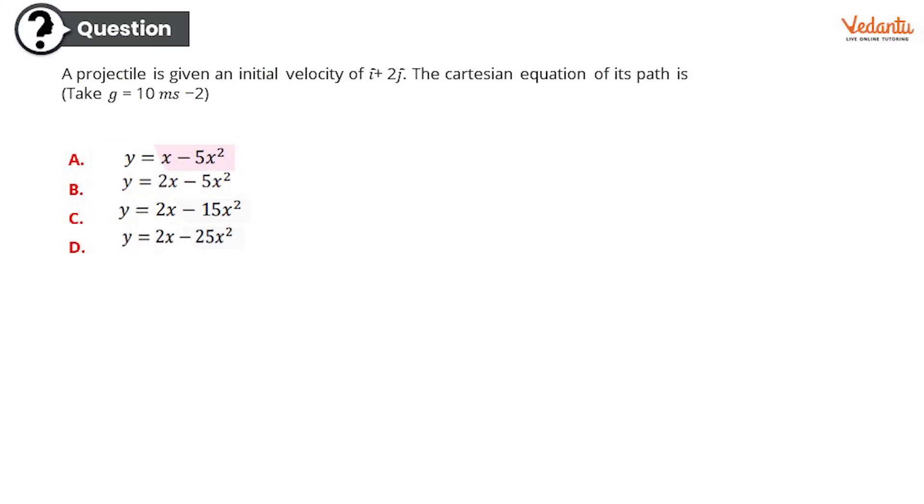I hope you really got the solution to the first question. Moving on to the second one, all the best. A projectile is given an initial velocity of î + 2ĵ. The Cartesian equation of its path is: Option A: y = x - 5x². Option B: y = 2x - 5x². Option C: y = 2x - 15x². Or option D: y = 2x - 25x².